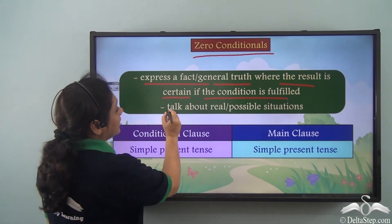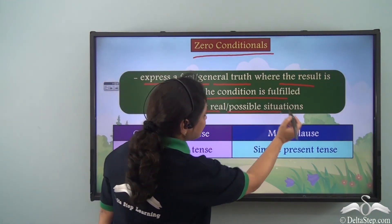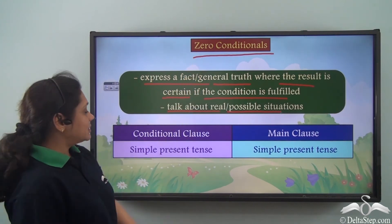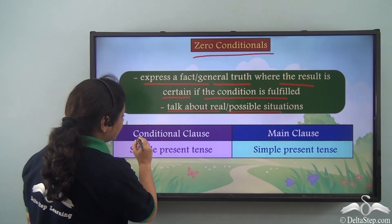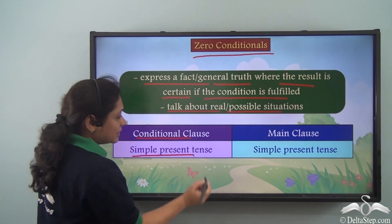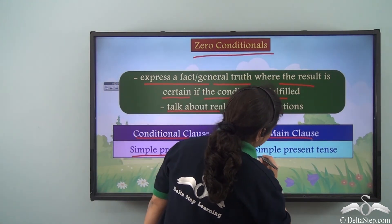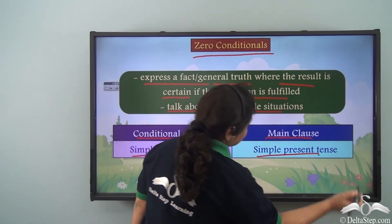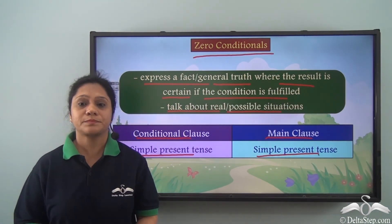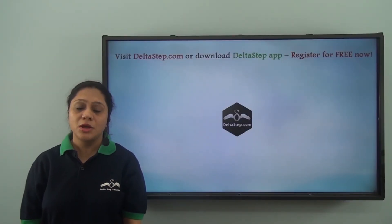They talk about real or possible situations. Zero conditionals have the conditional clause in the simple present tense and the main clause in the simple present tense also.